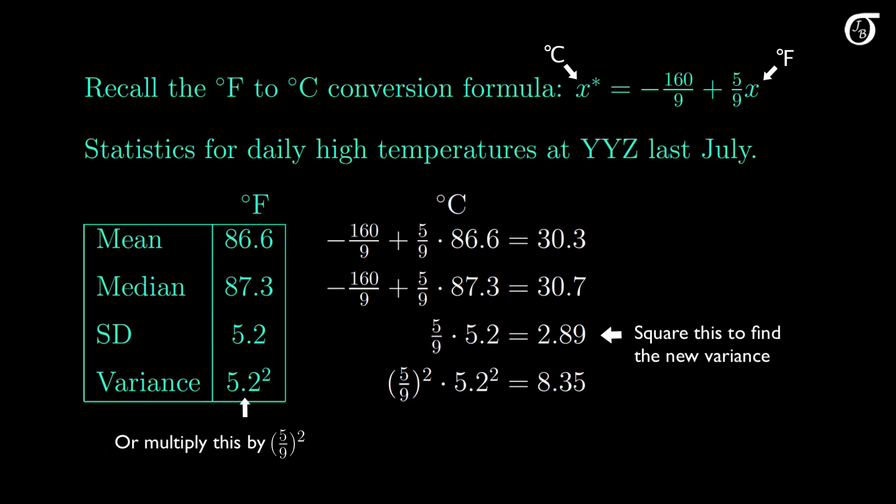So that's the effect of a linear transformation on these summary statistics. Note that these rules apply specifically to linear transformations and not necessarily to other transformations. For example, we can't find the mean of the square roots of some values by taking the square root of the mean — it doesn't work that way. From time to time it will be important for us to know the effect of additive and multiplicative constants on the mean, standard deviation, and variance, as this comes up in a number of different settings.